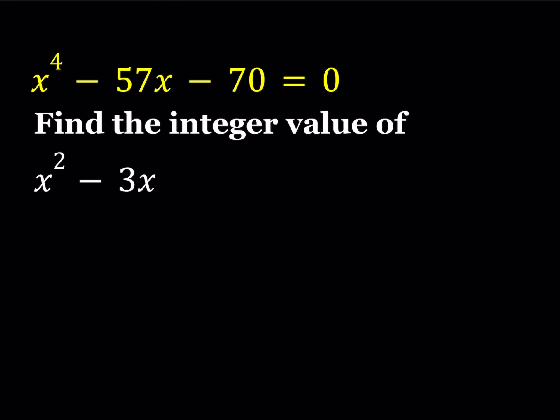Today's problem is finding the integer value of x² - 3x, a polynomial expression, given that x⁴ - 57x - 70 = 0. We're going to be manipulating this expression in a couple different ways. I'm going to show you two methods here.